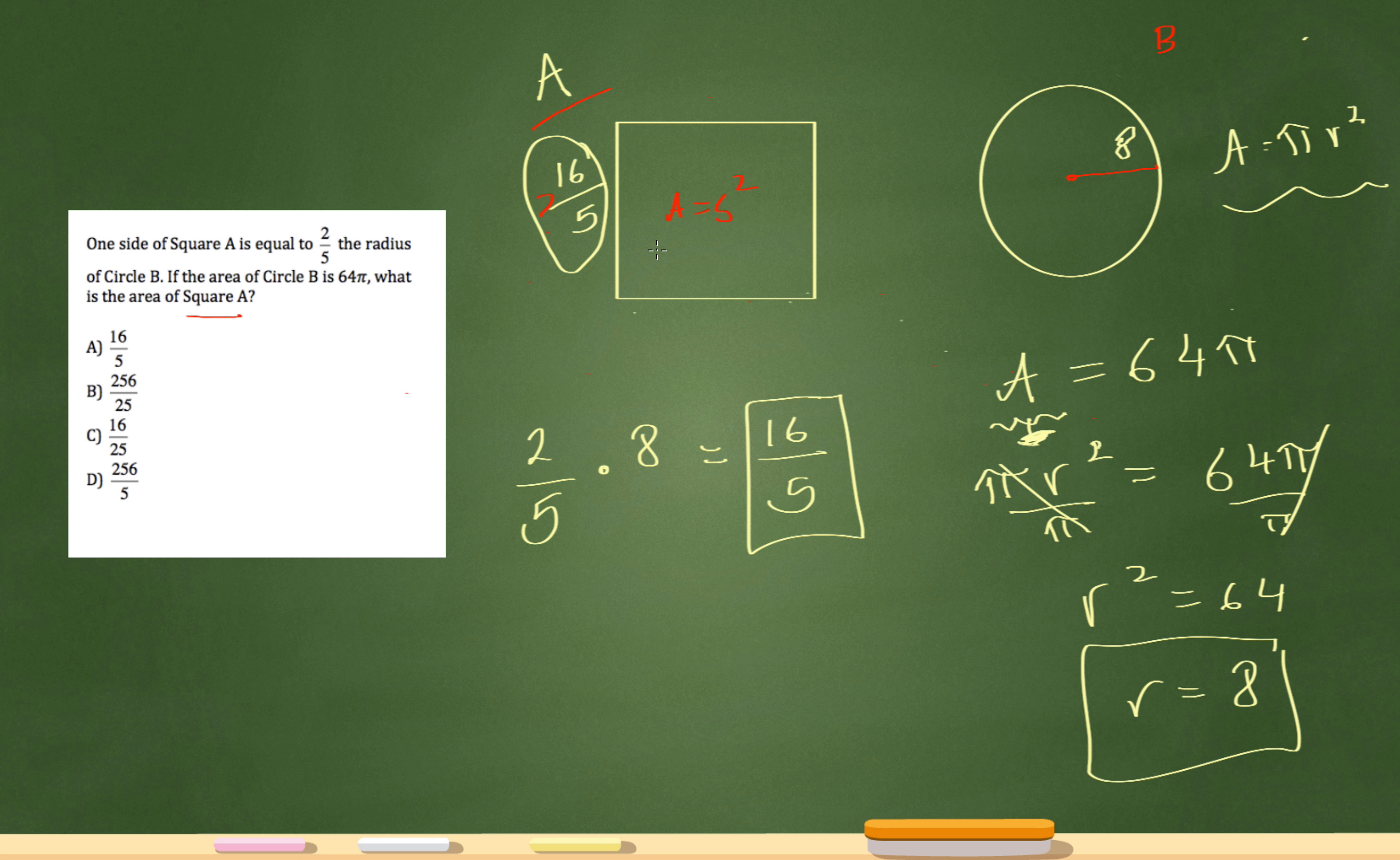Now my final part here is to figure out the area of the square. So the area of the square is just 16 over 5 times 16 over 5. 16 times 16 is 256. 5 times 5 is 25 for my final answer being 256 over 25.